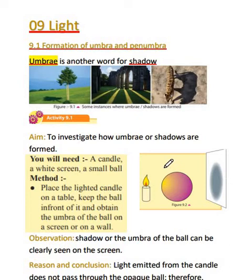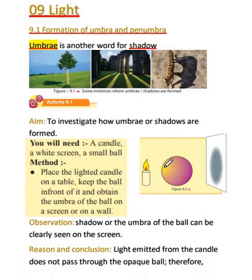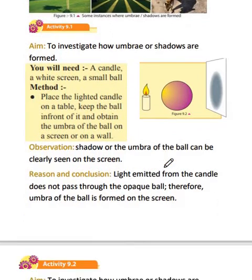So now let us start off with our first practical, Activity 9.1. Here we are going to investigate how umbra or shadows are formed. We are going to need a candle and a white screen. By a screen, you can use a white wall, a porcelain tile, a cardboard, some paper, an A4 sheet — anything as long as it's white and can be used as a screen.